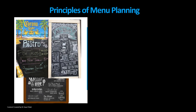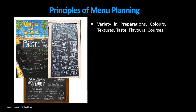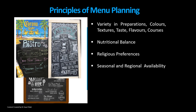Let's see the principles of menu planning. First, variety in preparations — colors, textures, tastes, flavors and courses. Second, nutritional balance. Third, religious preferences. Fourth, seasonal and regional availability. And the last is choices.